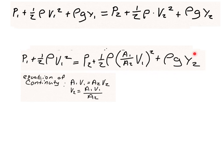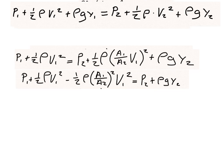We rewrite the Bernoulli equation incorporating the continuity substitution so we only have one unknown variable. Remember that v2 goes inside the square, so it becomes a quantity squared. We know both areas because area equals pi times radius squared. Next, we move the v2 term to the left side, giving us: initial pressure plus one-half density times v1 squared minus one-half density times (A1 over A2) squared times v1 squared.